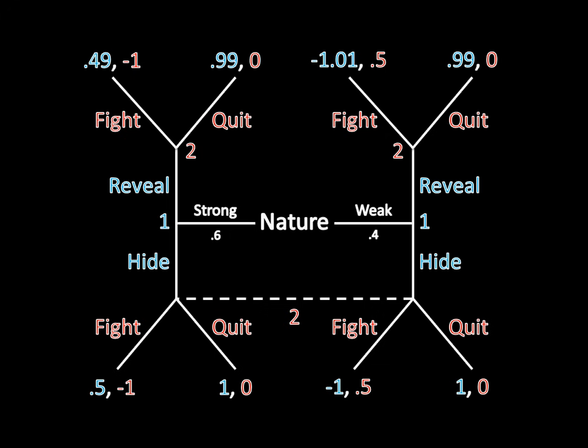The probability is 0.6 that Player 1 is strong, so 60% of the time Player 1 is strong, and 40% of the time Player 1 is weak. Player 1 observes this information — Player 1 knows whether he is strong or weak, and can choose whether to reveal that information to Player 2 or hide that information.